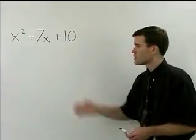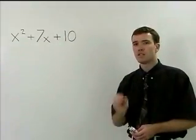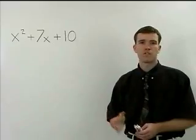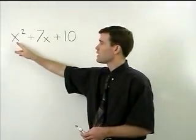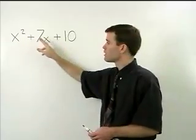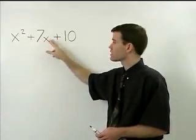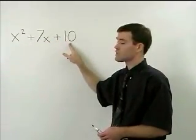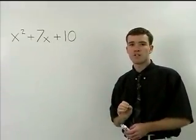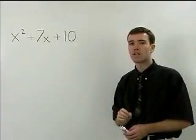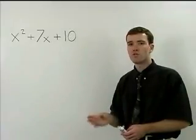However, the trinomial that you see is in a special form that can be factored in a new way. The first term has an x squared, the second term has an x, and the third term is a constant term. When a trinomial is in this form, it can be factored as the product of two binomials.